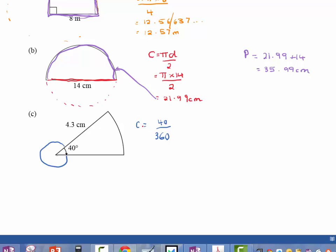So circumference equals the fraction of my circle I have, times π, times my radius, which is 4.3 times 2, because I'm using the formula circumference equals 2πr.